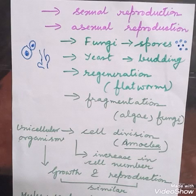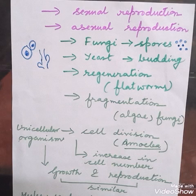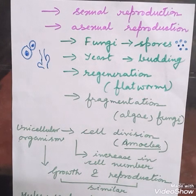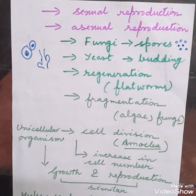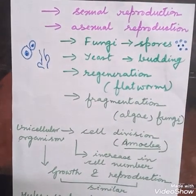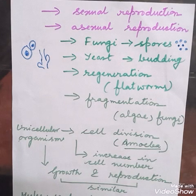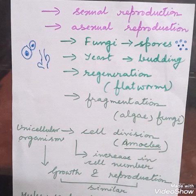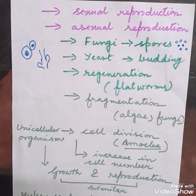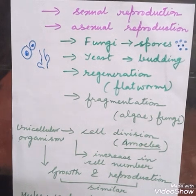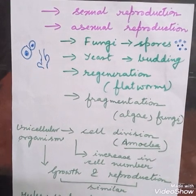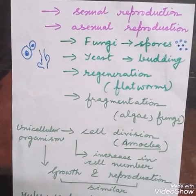Next is regeneration. 'Re' means once again and 'generation' means to generate. In this process, organisms can regenerate the lost part of the body and become a new organism. If any small piece of an organism, like a flatworm, is cut off, it will develop the same organ or body part and become a new organism. For example, if a lizard's tail is cut, that tail will grow back on its own and the lizard gets its full body form. This process is called regeneration.